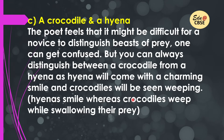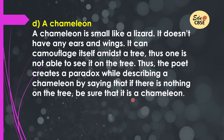Next is the chameleon. A chameleon is small like a lizard — it has no ears or wings, and it can camouflage itself on a tree so that one cannot see it. The poet creates a paradox by saying that if there is nothing on the tree, you can be sure it is a chameleon. If you want to understand what paradox is and how it has been used in the poem, watch the dedicated video.